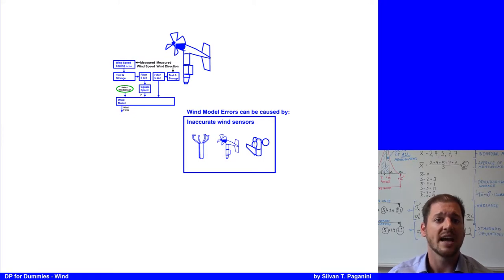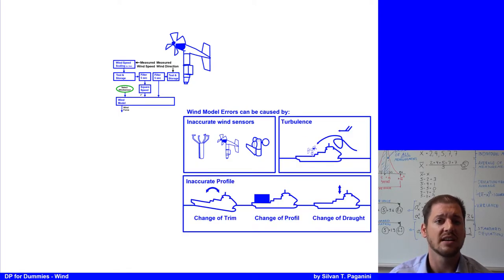The wind model errors can be caused by inaccurate wind sensors, turbulence, inaccurate profile caused by change of trim, change of profile while some manufacturers let the operator adjust the wind area depending on the operational mode and change of draft.